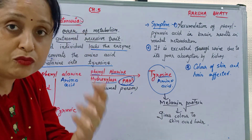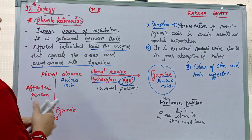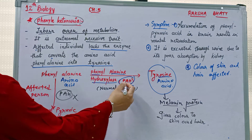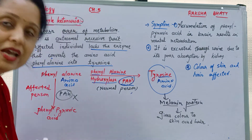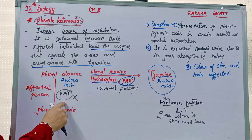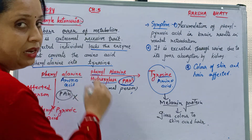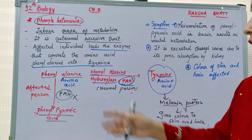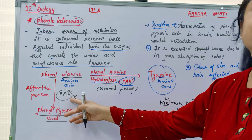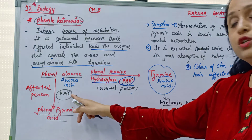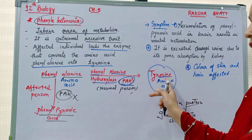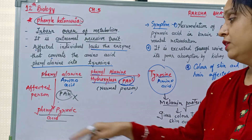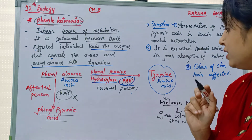But if the patient is suffering from phenylketonuria, the PAH enzyme — phenylalanine hydroxylase — is not synthesized. So in the affected person, phenylalanine is not converted into tyrosine; instead, it is converted into phenylpyruvic acid.